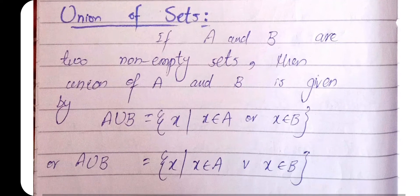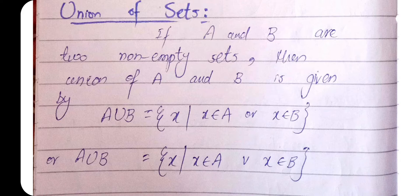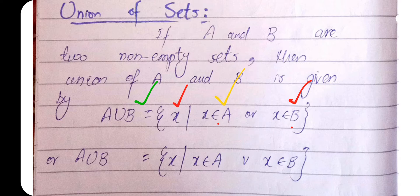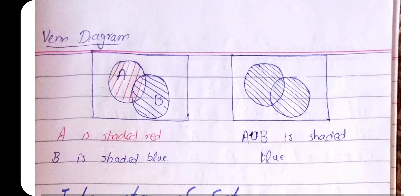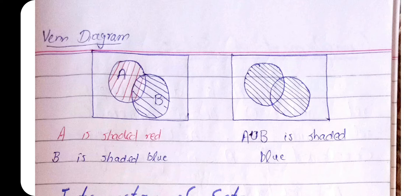Union of sets: if A and B are two non-empty sets, then the union of A and B, written A ∪ B, consists of all elements that are either in A or in B — that is, all x such that x belongs to A or x belongs to B. We represent this using a Venn diagram where A is shaded red and B is shaded blue, and the union covers the whole area belonging to either A or B.